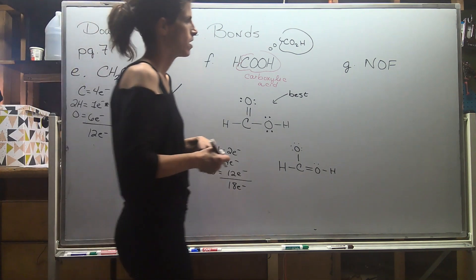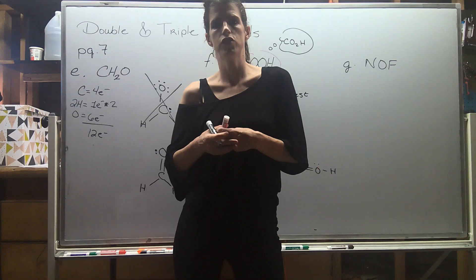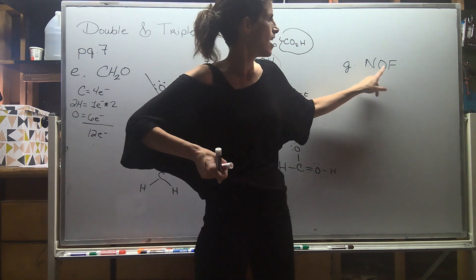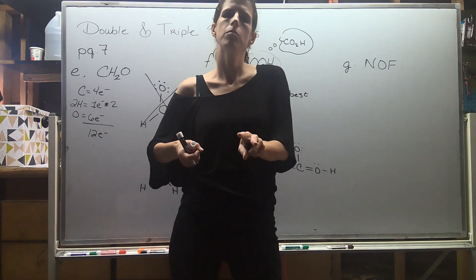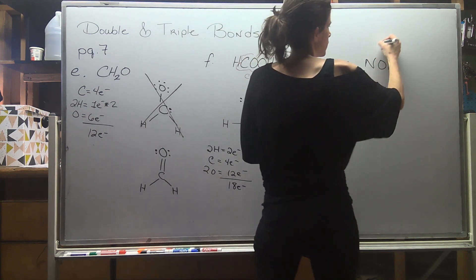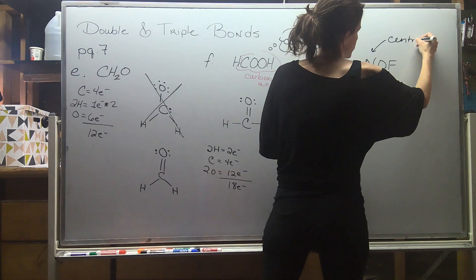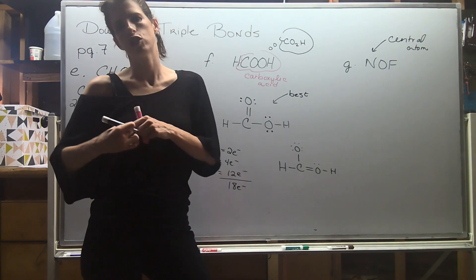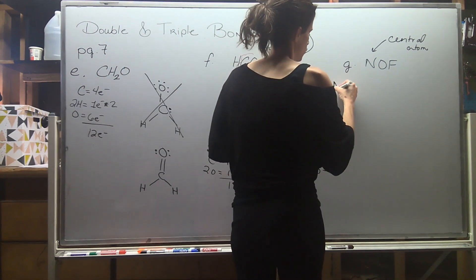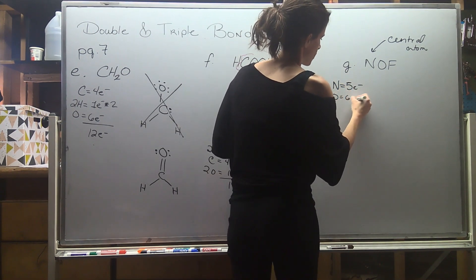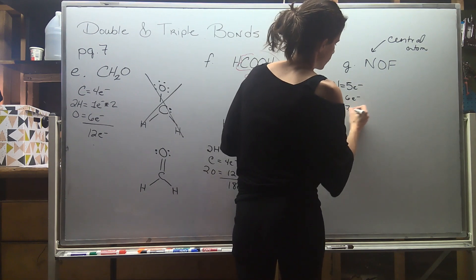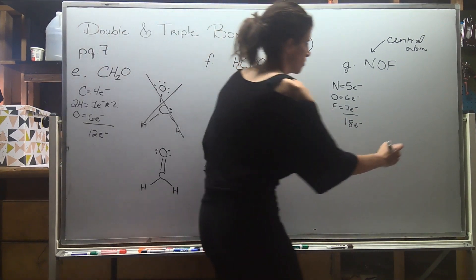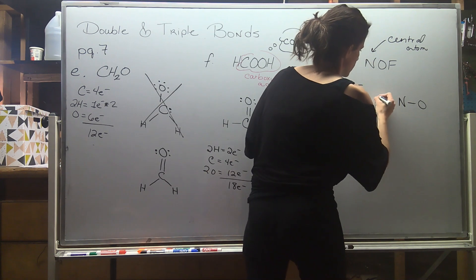One more: we have NOF. We want to consider who should be the central atom. Fluorine is the most electronegative and oxygen is the second most electronegative atom on the periodic table, so I'm going to go with nitrogen as my central atom — it's the least electronegative and best at sharing electrons. Electron math: five from nitrogen, six from oxygen, seven from fluorine — a grand total of 18 electrons. Nitrogen in the middle, then oxygen and fluorine.